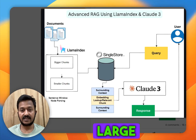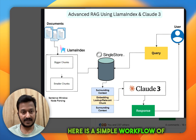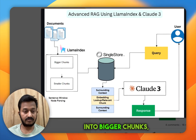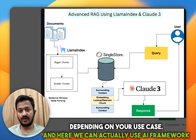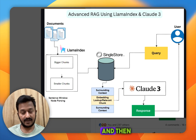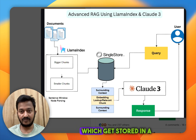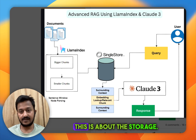With sophisticated large language models like Claude 3, advanced RAG has been possible. Here is a simple workflow of advanced RAG where documents get split into bigger and smaller chunks depending on your use case. We can use an AI framework like LlamaIndex, and these chunks get converted into embeddings which get stored in a vector database like SingleStore — this is the storage phase.